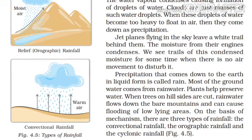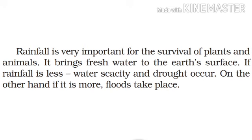Precipitation comes down to the earth in liquid form and is called rain. Most of the ground water comes from rain water. Plants help preserve water. When trees on hillsides are cut, rain water flows down the bare mountains and can cause flooding of low-lying areas and heavy floods.